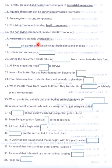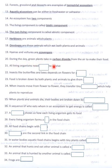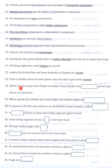Herbivores are animals which eat plants. Omnivores are those animals which eat both plants and animals. Hyenas and vultures are scavengers. During the day, green plants take in carbon dioxide from the air to make their food. All living organisms need oxygen to survive. Insects like butterflies and bees depend on flowers for nectar.